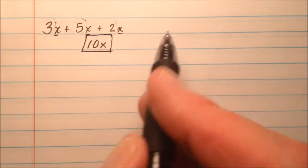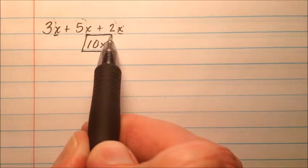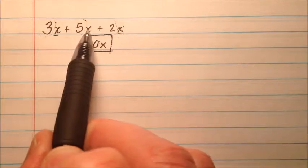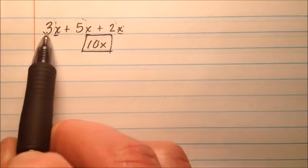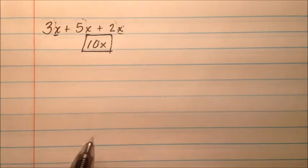Be very careful not to change the variable itself. You're not changing the apples into apples squared or apples cubed - that doesn't make sense. The variables stay the same. Only the coefficients get added or subtracted. In this first example we have 10x.